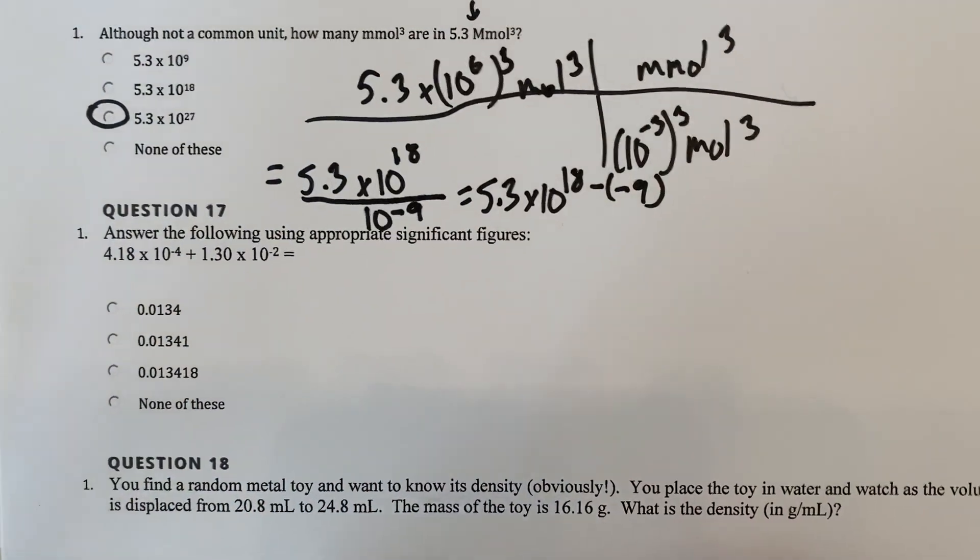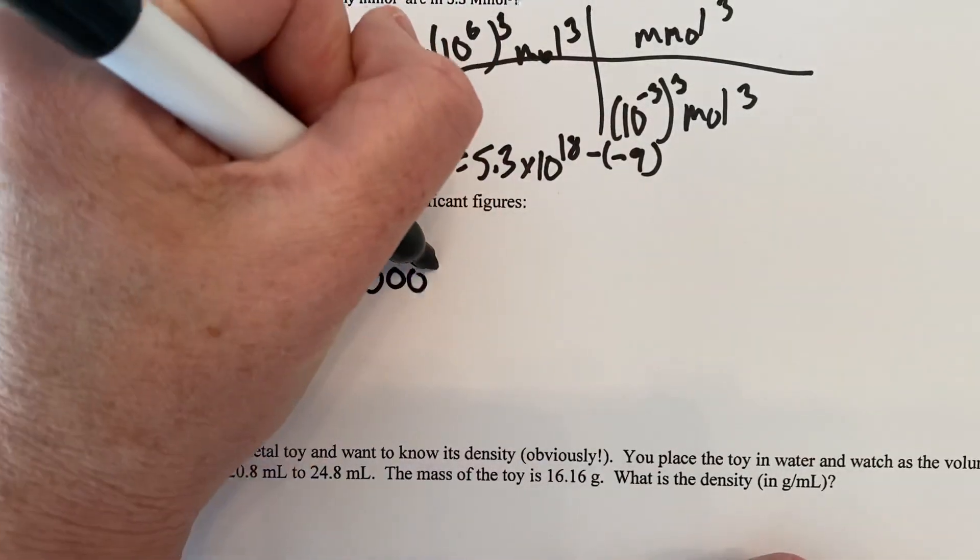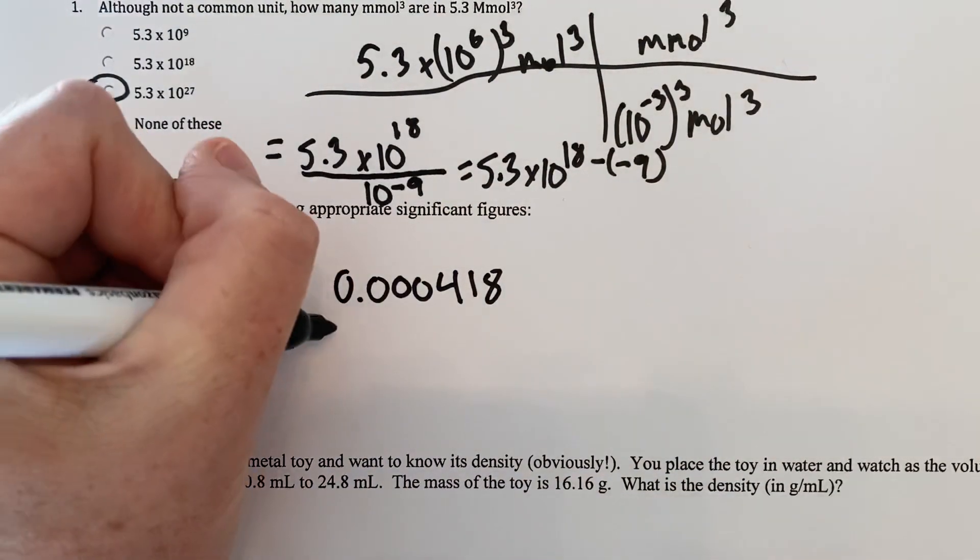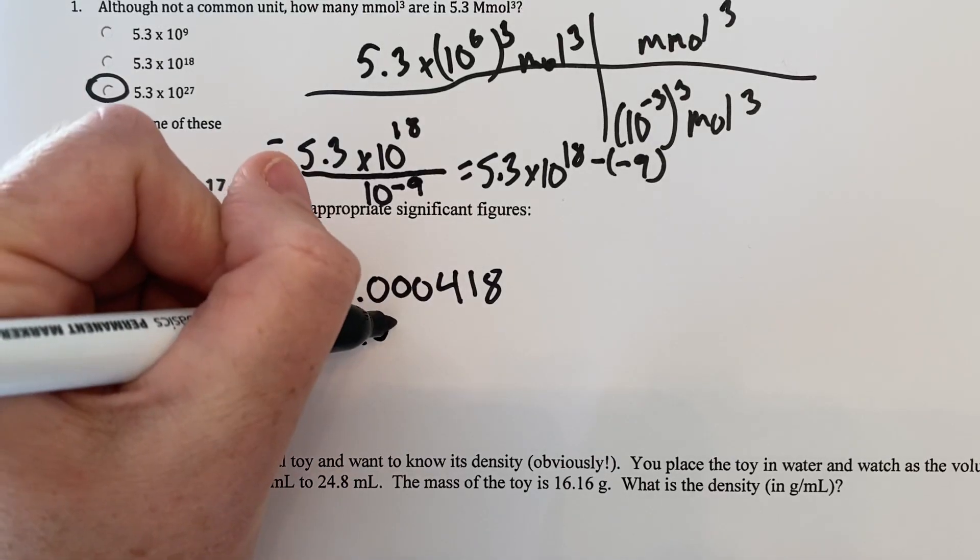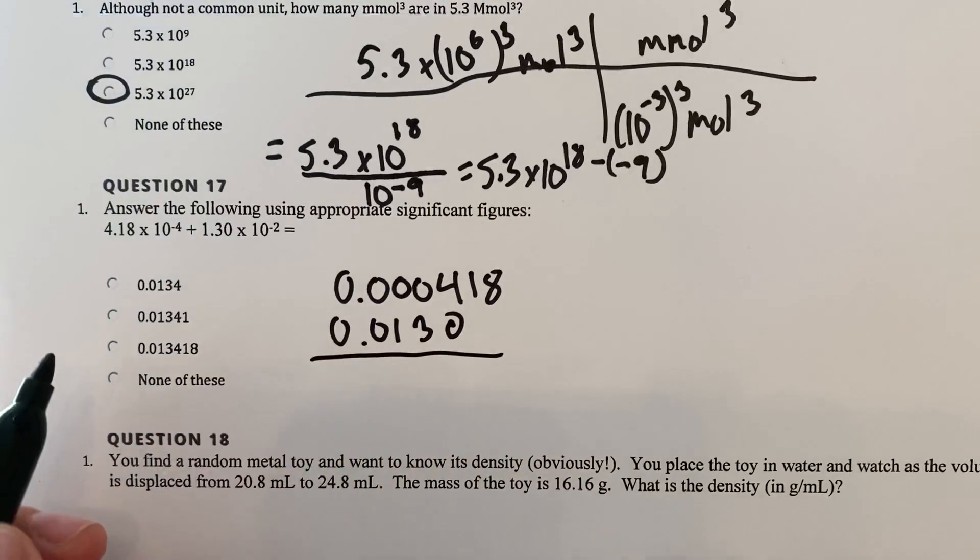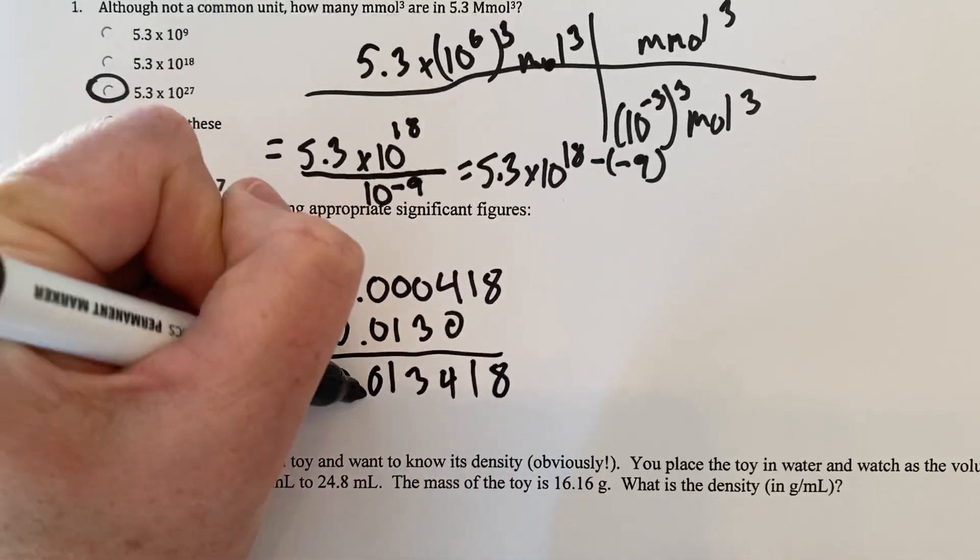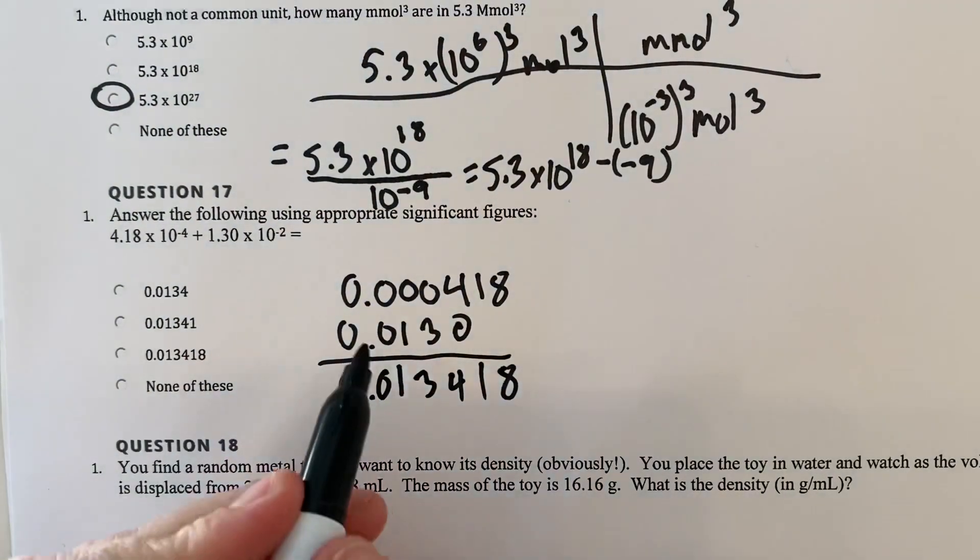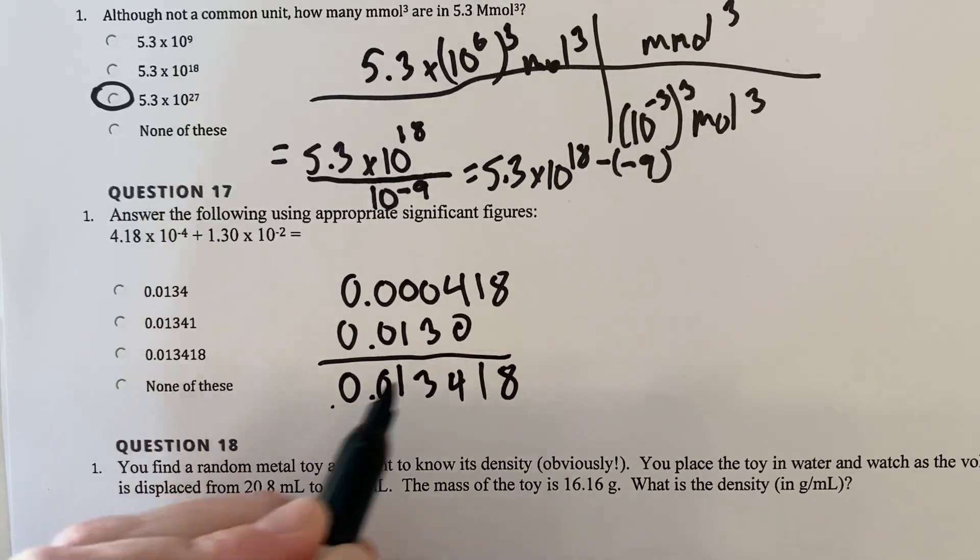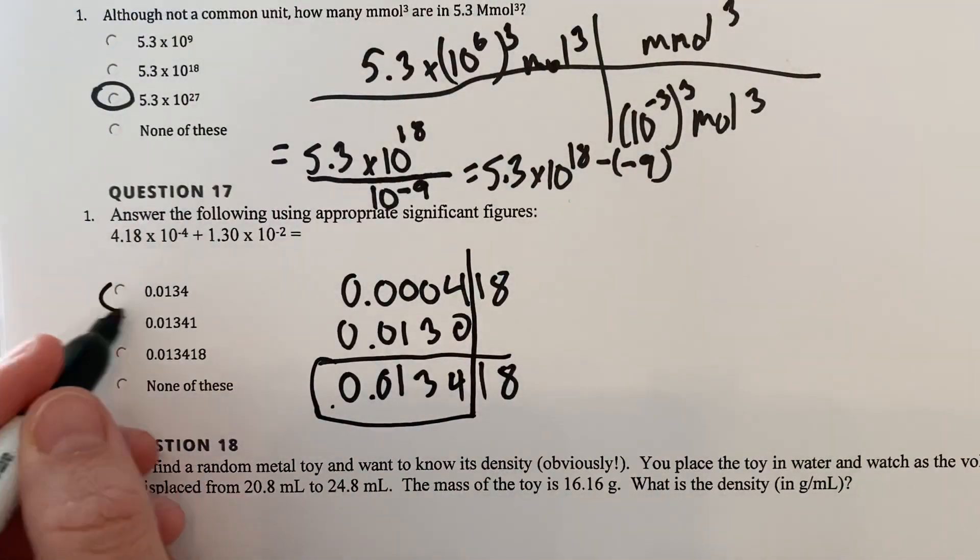Number 17. Answer the following with appropriate sig figs. So we got 0.000418. I'm going to take it out of scientific notation to add it. And 0.0130 here. And we're simply adding it. Get 8, 1, 4, 3, 1, 0, 0 point. Kind of going backwards. And then we're going to look at precision. You knew this one all the way down here. You knew this one only to about the fourth place. Therefore, your answer you only know to the fourth place. This is your answer. 0.0134.